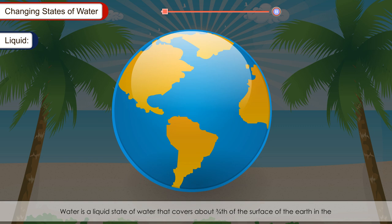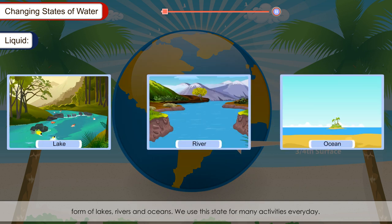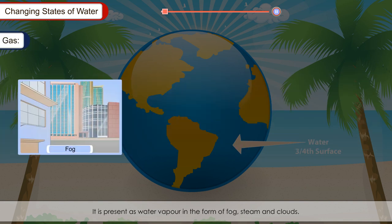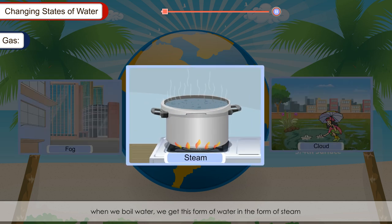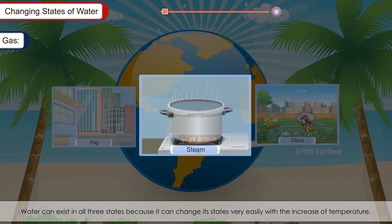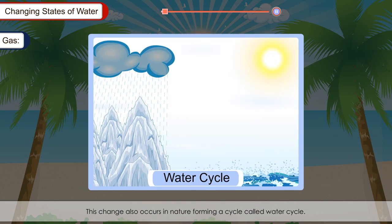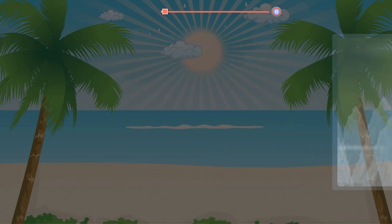Liquid water covers about three-fourths of the earth's surface in the form of lakes, rivers and oceans. We use this state for many activities every day. Water is also present as vapour in the form of fog, steam and clouds. When we boil water, we get this form as steam. Water can exist in all three states because it changes state easily with an increase in temperature. This change also occurs in nature, forming a cycle called the water cycle.